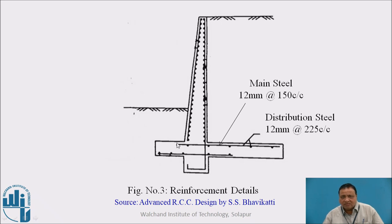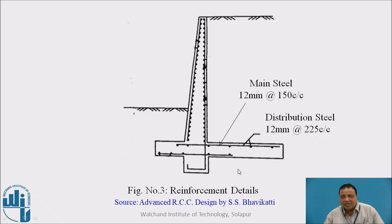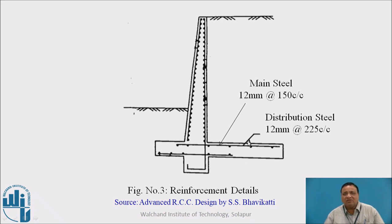The reinforcement detail shows main steel of 12 mm Tor bars at 150 mm center to center. Since the heel slab cantilever is subjected to sagging bending moment, the steel is provided on the top face. Distribution steel is provided perpendicular to the main steel. If required, distribution steel can be provided on both faces. This completes the design of the heel slab of the cantilever retaining wall.